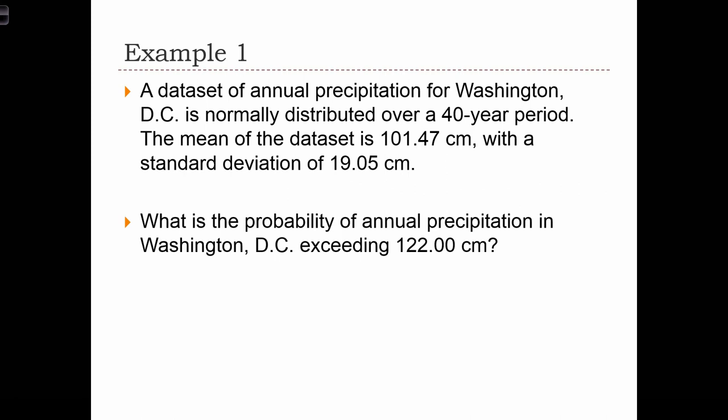Here's an example problem. A data set of annual precipitation for Washington, D.C. is normally distributed over a 40-year period. The mean of the data set is 101.47 centimeters and the standard deviation is 19.05 centimeters. What is the probability of annual precipitation exceeding 122 centimeters?